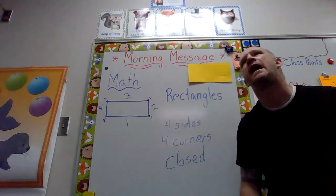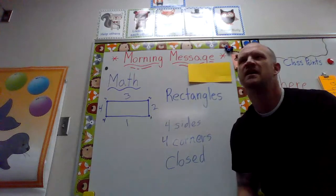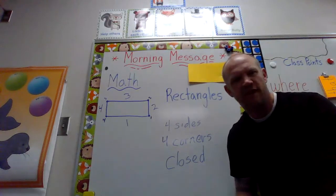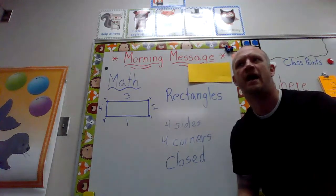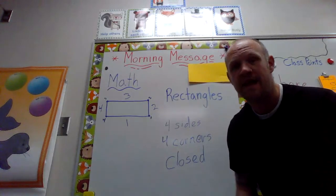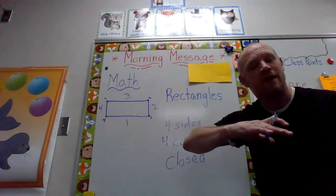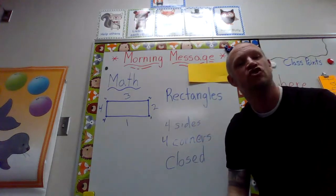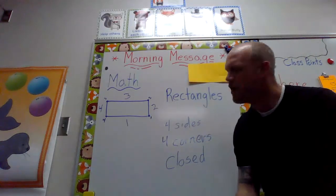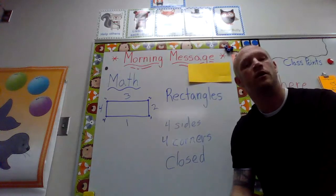And the last thing about this shape: what type of lines does it have? Does it have squiggly lines? Does it have curved lines? Does it have straight lines? Good job! Those lines on the rectangles are always straight. They're not curved, they're not squiggly, they are straight.